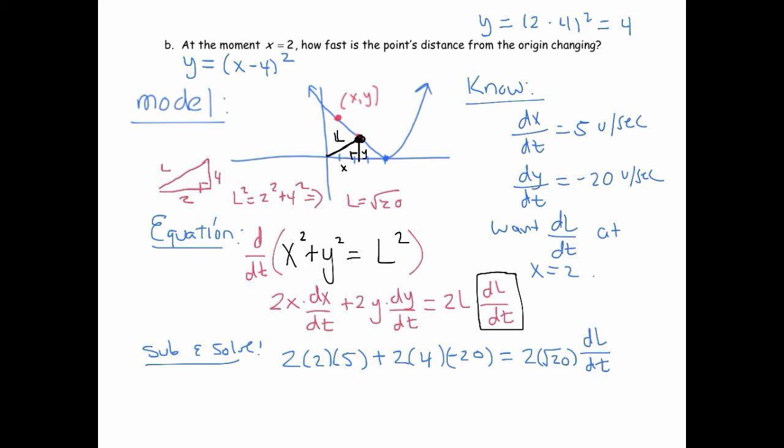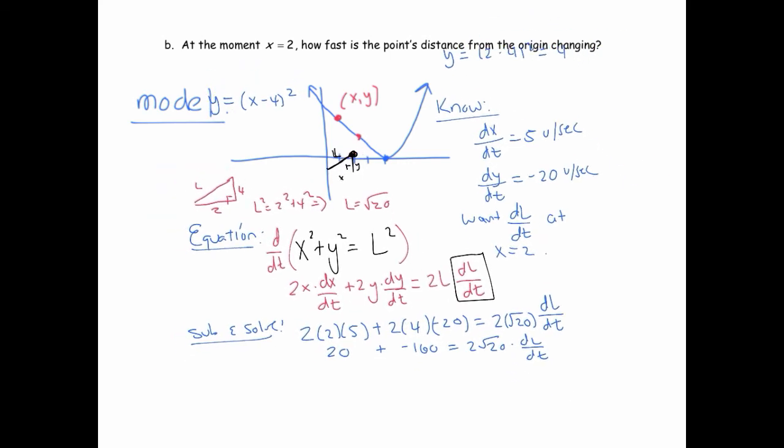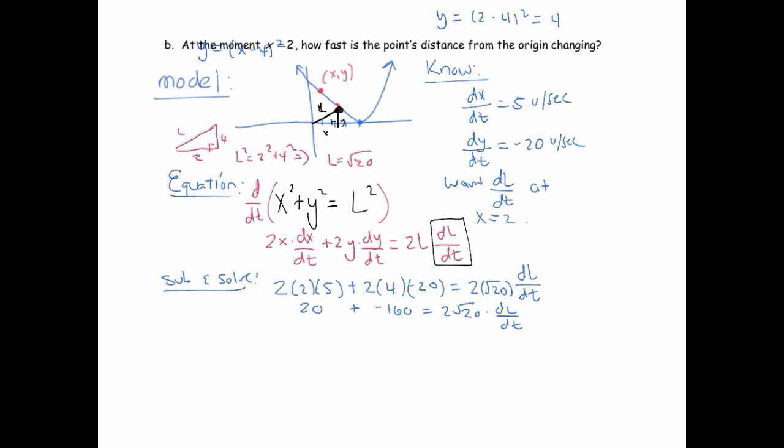Alright, so even though it didn't seem like we knew those things, we actually did. So this is 5 times 4 is 20. So I get 20 plus 8 times negative 20 is negative 160 equals 2√20. I probably could have divided everything by 2, but it's okay. So solving, I get negative 140 over 2√20 is what our dL/dt is. And that ends up being about negative 15.65. And we're going to say units per second.